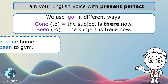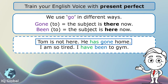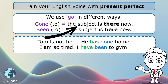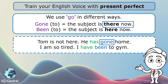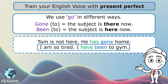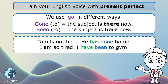Have a look at an example. Tom is not here — he has gone home. Tom is the subject, we are using he, so we use has, and the past participle is gone because he is there now, he is at home. Sentence two: I am so tired, I have been to the gym. The subject is I, so we use have, and we use the past participle been because we are here now.